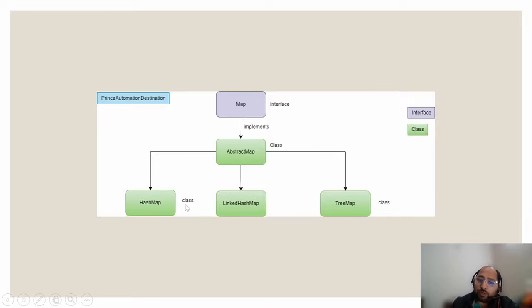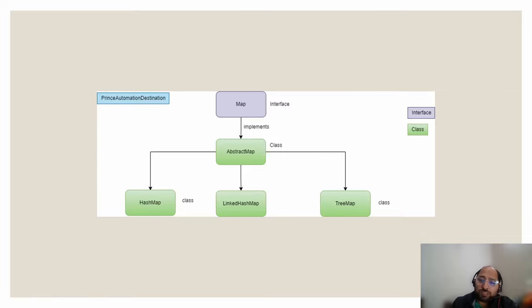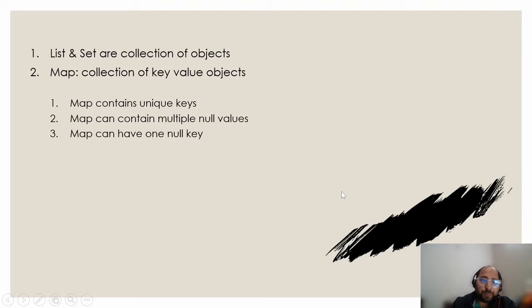Let's quickly understand these three map collections. HashMap is used when we are not bothered about insertion order. LinkedHashMap is used when we want to maintain the insertion order. TreeMap is used when we want to maintain the sorting order. In the current lecture the focus will be HashMap and its various methods, and in the next lecture we'll be covering LinkedHashMap and TreeMap.